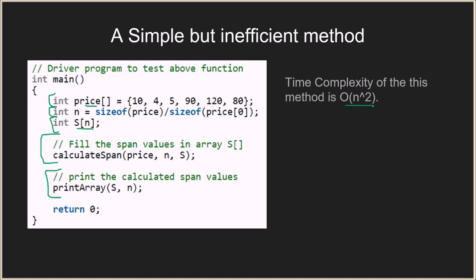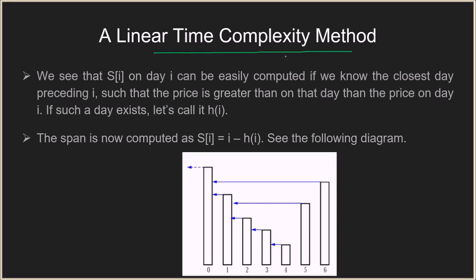Now we look at a better solution with linear time complexity. The span of a day i can be easily computed if we know the closest day preceding i where the price was greater than on day i. For example, if we calculate the span for the fifth indexed day, we find the nearest preceding day where the stock value was greater — say that is index one, which we call h(i). The span then becomes i minus h(i), so five minus one equals four.